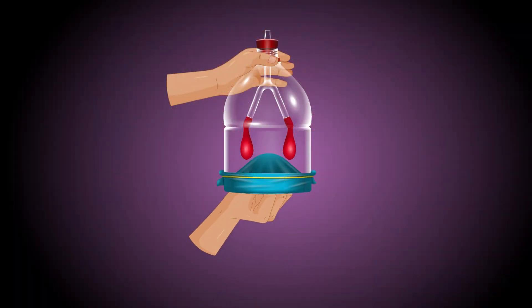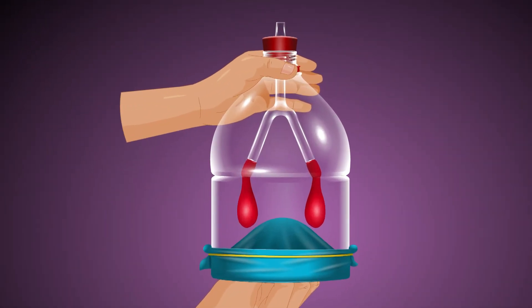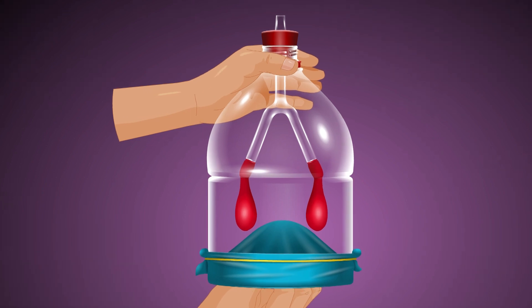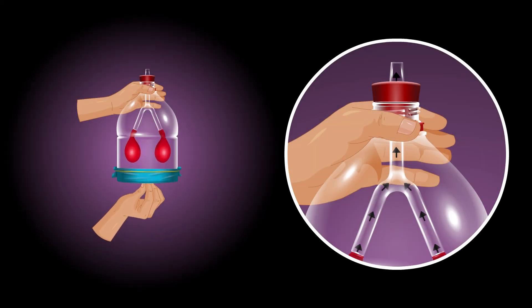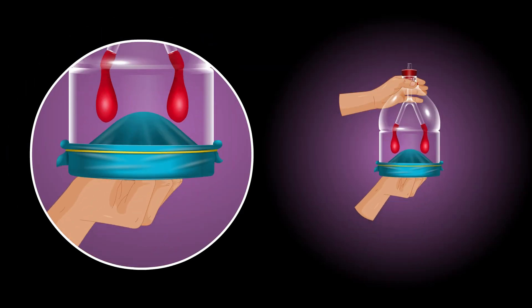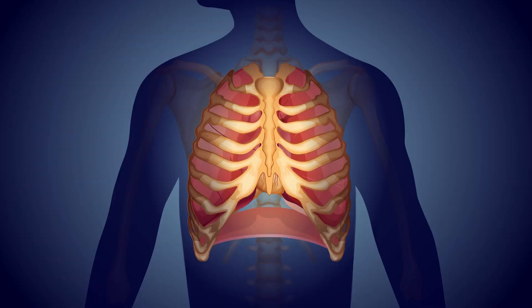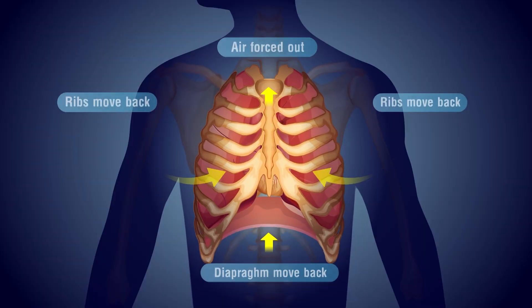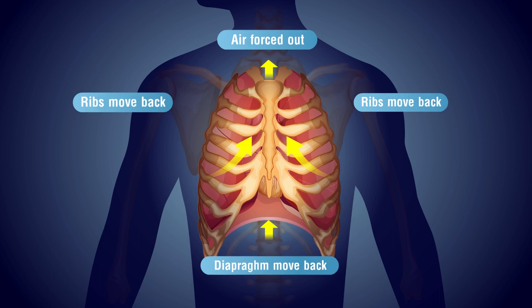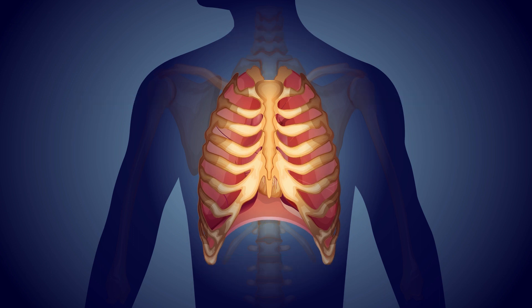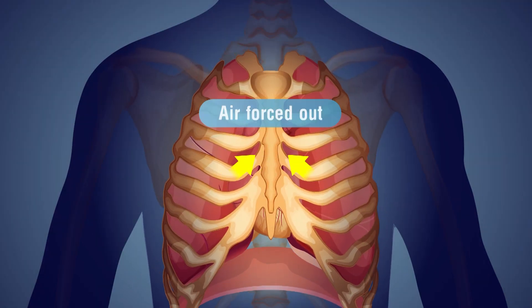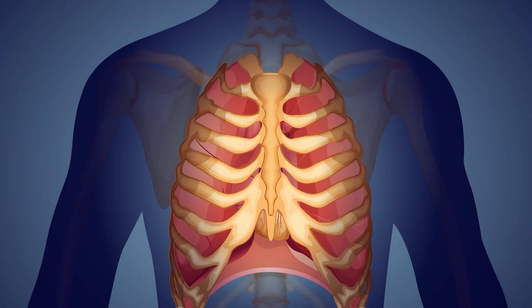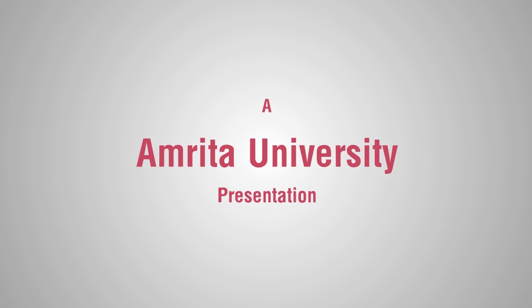When we push up the rubber sheet, the space of the bottle decreases and it pressures the balloons, so air gets out from the bottle through the Y-shaped glass tube and the balloons start to deflate. This explains exhalation — the ribs move downwards, the diaphragm returns to its position, the size of the chest cavity reduces, and air gets out from the lungs.